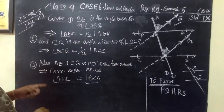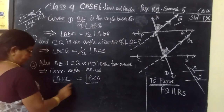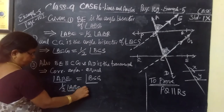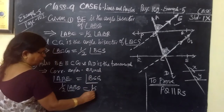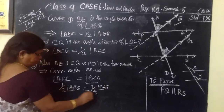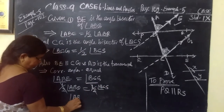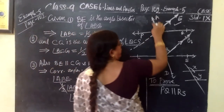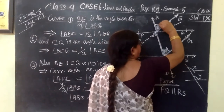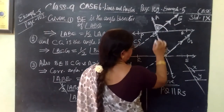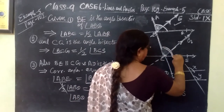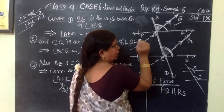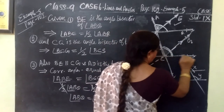Therefore ABE equals BCG. Already ABE means half of angle ABQ, and BCG means half of angle BCS, so the halves cancel. Therefore the full angle ABQ equals the full angle BCS. The line is named as PQ and RS, and AD is the transversal.